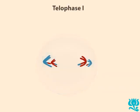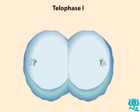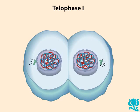In some species, telophase 1 occurs, a stage in which chromosomes decondense, nuclear membranes reform, and the cytoplasm divides in a process called cytokinesis. A short interphase period called interkinesis may then follow telophase 1. Note that DNA replication does not take place during interkinesis.